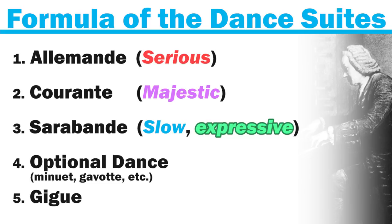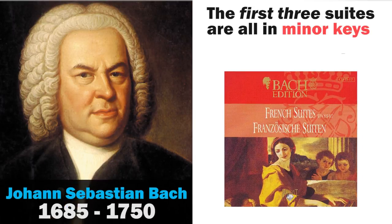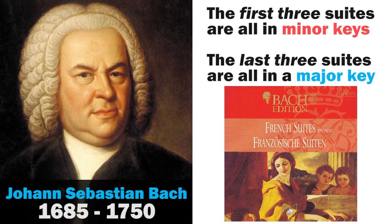The fourth dance is a little bit different in each of the suites — it could be a minuet, it could be a gavotte; it's one of the optional ones. And then the very last one is consistent through all six suites: it's the gigue, which has a very lively flavor. Bach's first three French suites are all in minor keys and are a little bit more serious and somber, while the last three are in major keys and have a brighter and lighter character.